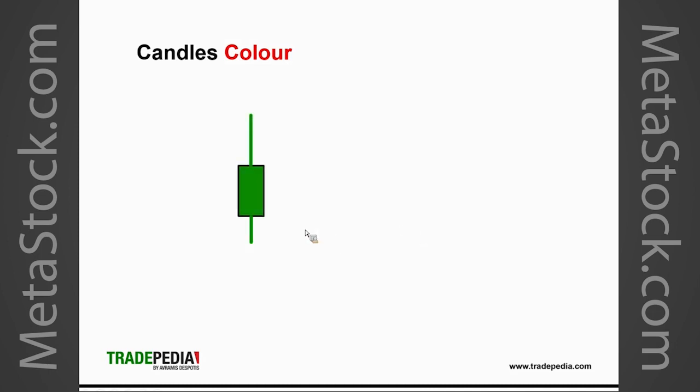We separate candles by color. We have a green candle when the close is higher than the open — we call this a bullish candle — and we have a red candle, or bearish candle, when the close is lower than the open.